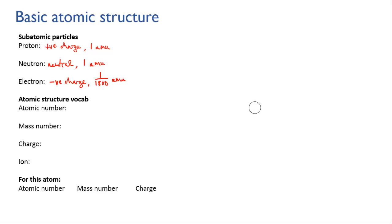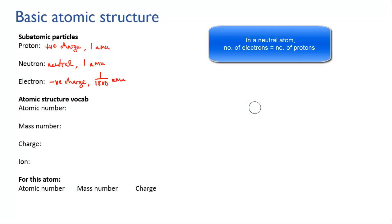In a normal uncharged atom the number of electrons equals the number of protons, and this means that the negative charges of the electrons cancel out the positive charges of the protons, and overall the atom is neutral.